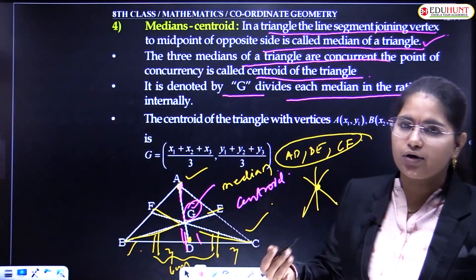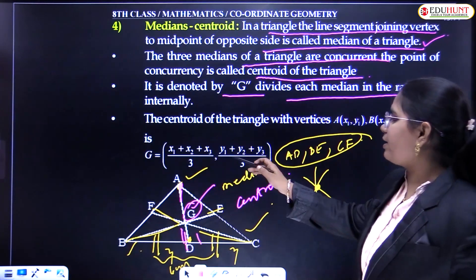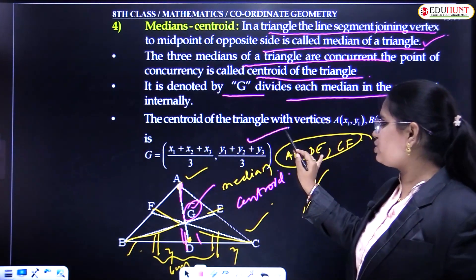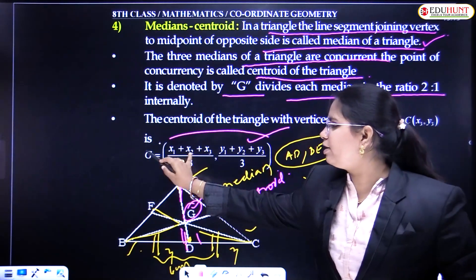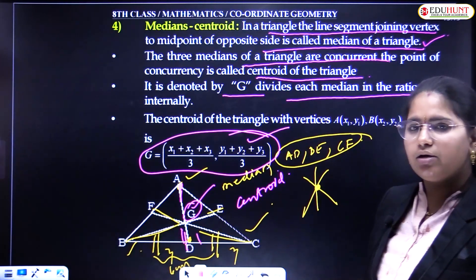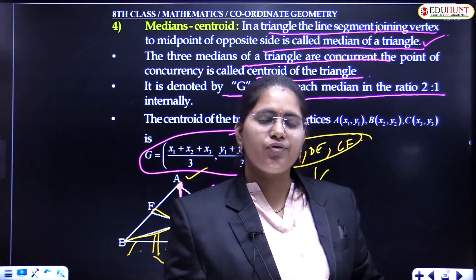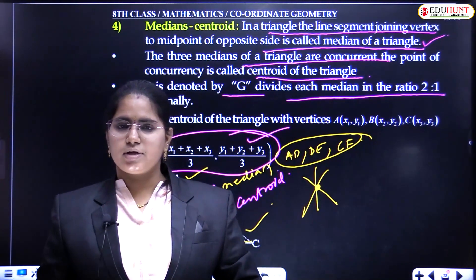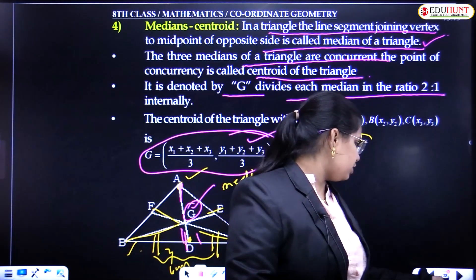The centroid always divides each median in the ratio 2 to 1, internally. The formula to calculate the centroid coordinates is: G = ((x1 + x2 + x3)/3, (y1 + y2 + y3)/3). This is the formula to calculate the centroid, which is the point of intersection of all three medians.